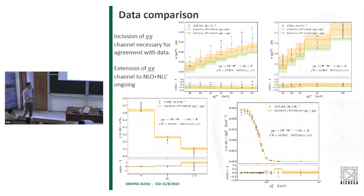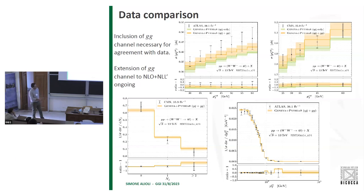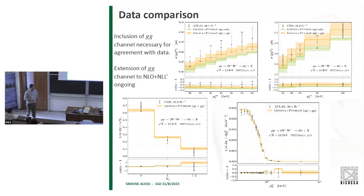Comparing with data, the inclusion of the gg channel is necessary — we are not the first to reach this conclusion. We could include this gg channel at NLL-prime accuracy and are working in this direction. The jet veto distribution is well described by this tool that directly resumms this quantity and accounts for hadronization effects from the parton shower. The pT of the charged lepton pair is also very well described by this Monte Carlo.